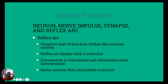There's then what we call a reflex arc, which is the simplest form of function within the nervous system. It begins with a stimulus and results in some kind of action — for example, your hand touches a hot plate, triggering some kind of action. Interneurons are stimulated and then stimulate another interneuron, which is often tied to some kind of motor neuron and can stimulate muscle movement.